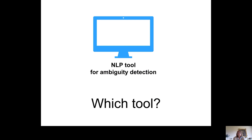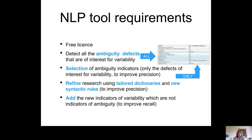The question then is which natural language processing tool for ambiguity detection to use. Our requirements are: it must detect all relevant ambiguity defects, offer the ability to select only the indicators of interest, allow editing of dictionaries to add and remove words, support adding new syntactic rules to improve precision and reduce manual work, and allow adding new variability indicators that are not strictly ambiguity indicators.